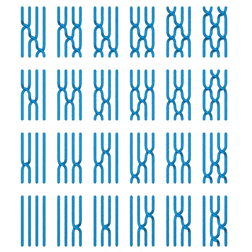Compare with string links. Different braids can give rise to the same link, just as different crossing diagrams can give rise to the same knot. Andrei Markov described two moves on braid diagrams that yield equivalence in the corresponding closed braids. A single-move version of Markov's theorem was published by Sofia Lambropoulou and Colin Rourke. Von Jones originally defined his polynomial as a braid invariant and then showed that it depended only on the class of the closed braid. The Markov theorem gives necessary and sufficient conditions under which the closures of two braids are equivalent links.